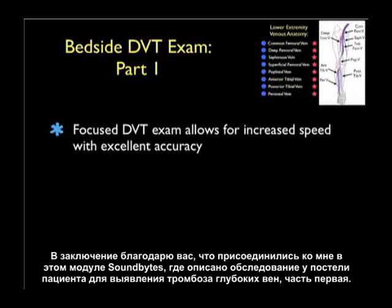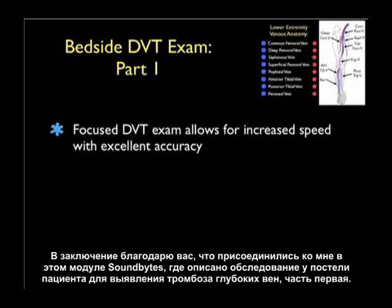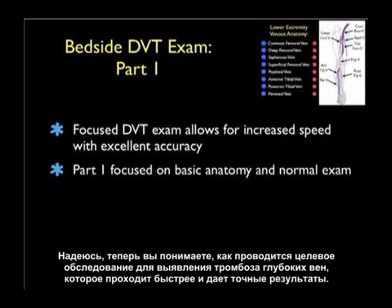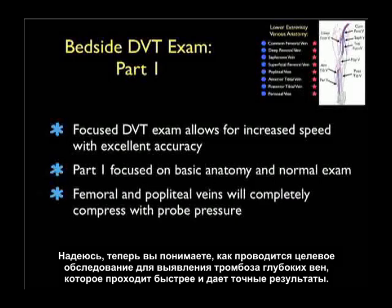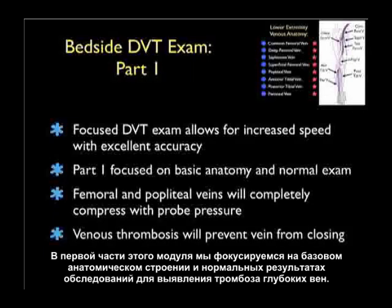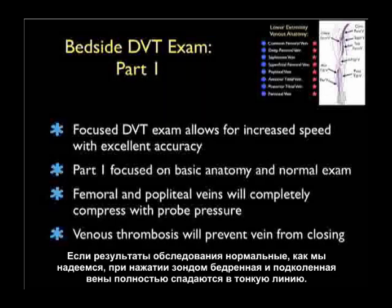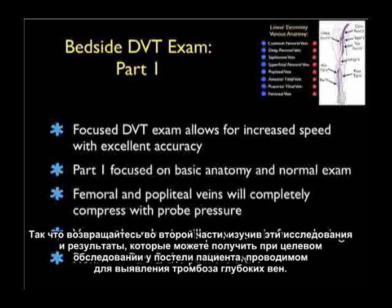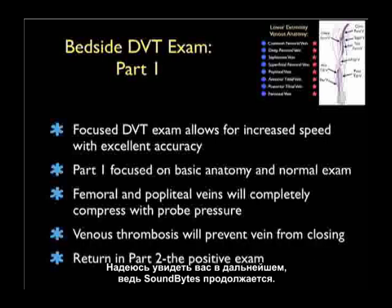In conclusion, thank you for joining me for this SoundBytes module on bedside DVT examination Part 1. The focused DVT exam allows for increased speed with excellent accuracy. In Part 1 we focused on basic anatomy and the normal examination — for a normal exam, the femoral and popliteal veins will completely compress with probe pressure. A venous thrombosis will prevent the vein from closing, and we'll return in Part 2 to go over the positive examination and findings you might encounter on the focused bedside DVT examination.